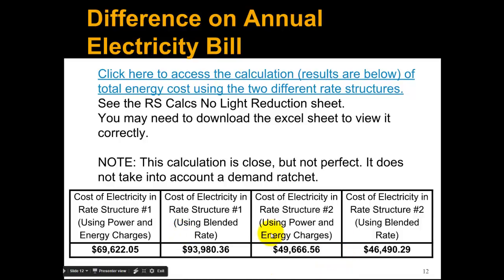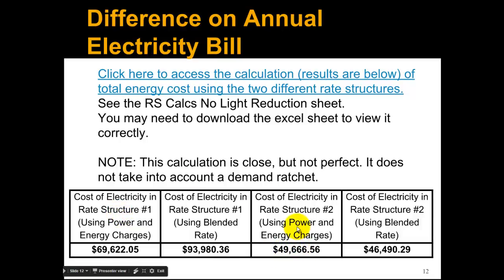Doing the same thing with rate structure number two, there's not as big of a difference with the blended rate, but in this case the blended rate is actually lower. That's why you always want to really use the power and energy charges and never the blended rate, because it can make a huge difference when you're evaluating whether or not to stay on one rate or another. The school actually did a really good change — their utility electric charges for the year were almost $70,000 under the first rate structure, and now they reduced it to $50,000. That's a $20,000 savings from just a phone call to the utility company.